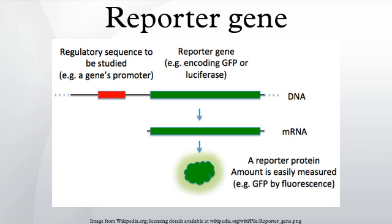Commonly used reporter genes that induce visually identifiable characteristics usually involve fluorescent and luminescent proteins. Examples include the gene that encodes jellyfish green fluorescent protein, which causes cells that express it to glow green under blue light; the enzyme luciferase, which catalyzes a reaction with luciferin to produce light; and the red fluorescent protein from the gene DS-RED.